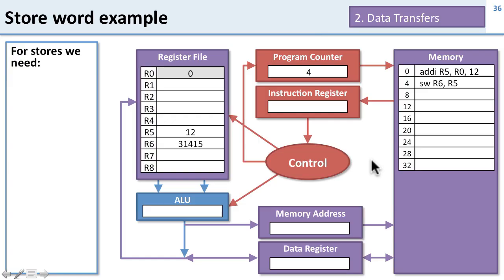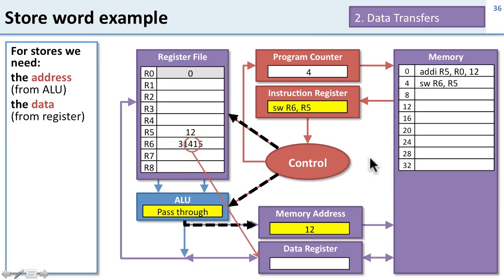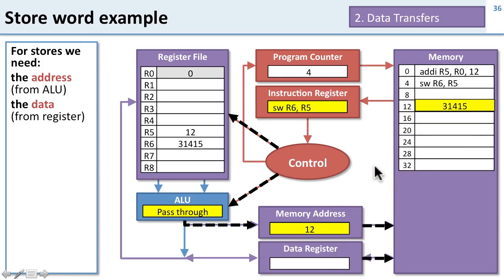Let's take a look at an example of storing something. To store, we need to know the address from the ALU — where in memory we're going to put it — and the data we're going to store, which we get out of a register. On instruction 4, the store word instruction, the ALU does the same thing it did for load word: it passes through the register that tells us where to store, in this case R5, using that as the address. Then we take the data out of the register file — register 6 — put it in the data register, and write it to memory at location 12. That's how a store works.